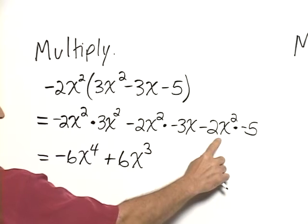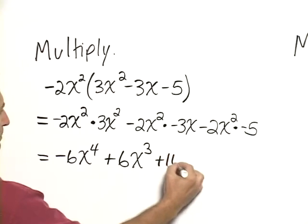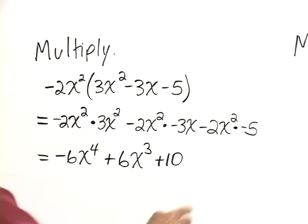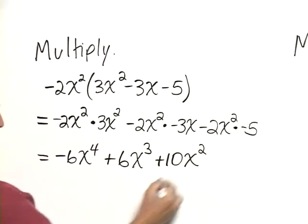And in this product, we have negative 2 times negative 5 for positive 10, and then it's just an x squared. There's no variable term there, so we have x squared.